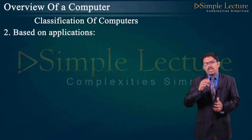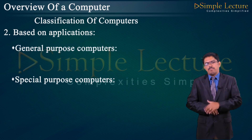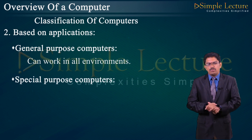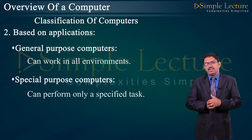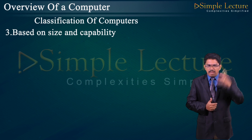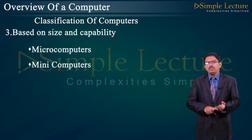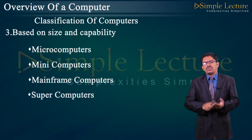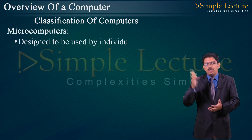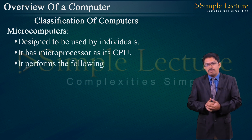Based on applications, computers are classified into two types: general purpose and special purpose. General purpose computers can work in all environments, whereas special purpose computers can perform only one task at a time. Based on size and capability, computers are classified into four types: microcomputer, minicomputer, mainframe computer, and supercomputer. Microcomputers are designed to be used by individuals and have a microprocessor as the CPU.